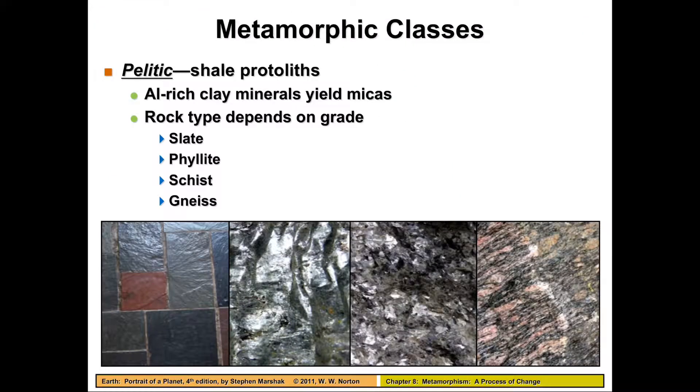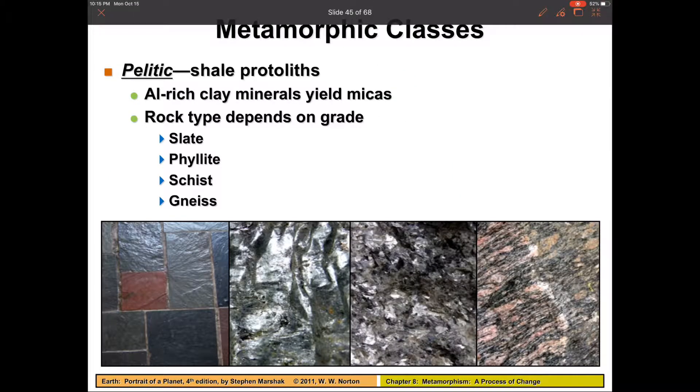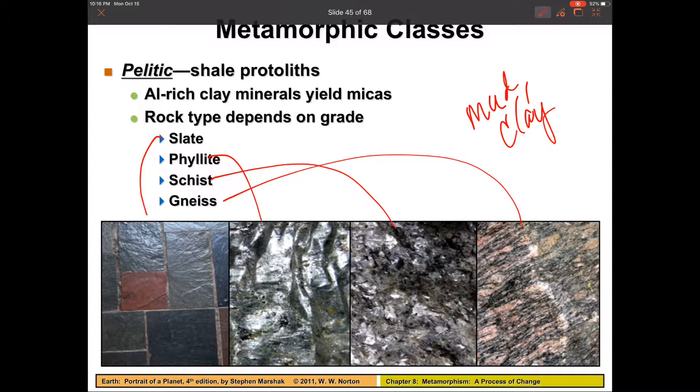The first is our pelitic protoliths, which is the shale protoliths. So remember, it starts out as mud or fine-grained clay, and with the effects of pressure, it'll turn into slate, phyllite, schist, or gneiss, depending upon the pressure grade.